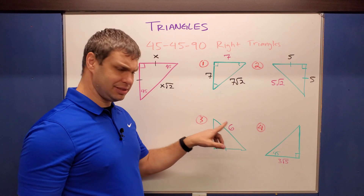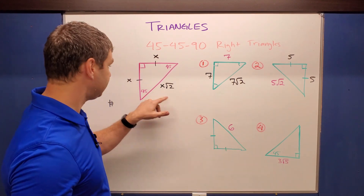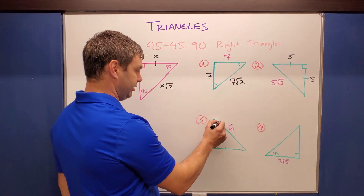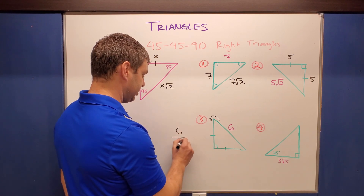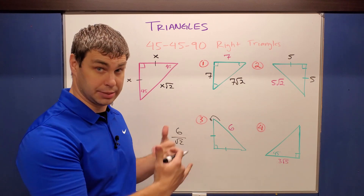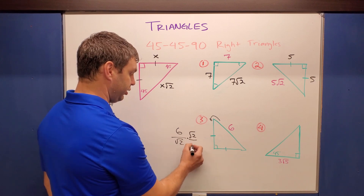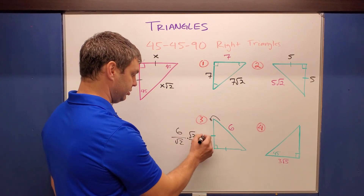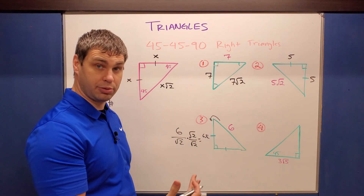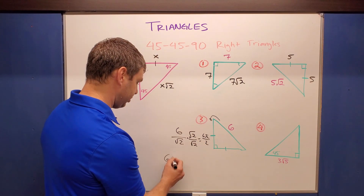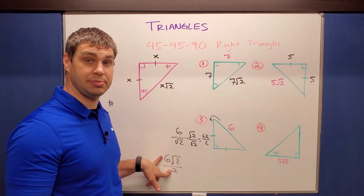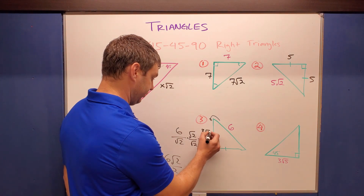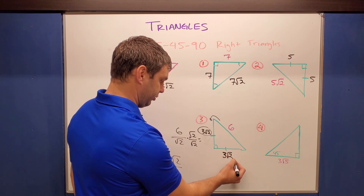Number three is a bit trickier — the hypotenuse is 6. Normally it should be something times √2, so to find the leg we divide 6 by √2. Since we can't have a square root in the denominator, we rationalize by multiplying by √2 over √2. The numerator becomes 6√2 and the denominator becomes √4 = 2, giving us 6√2 over 2, which simplifies to 3√2. Both legs are 3√2.